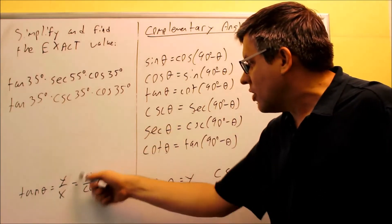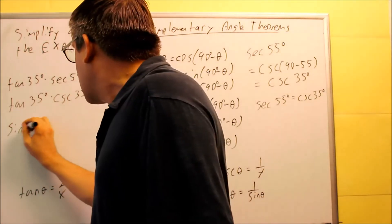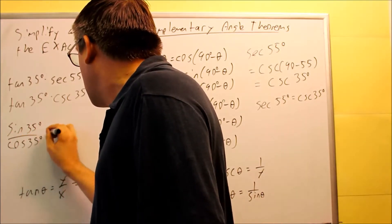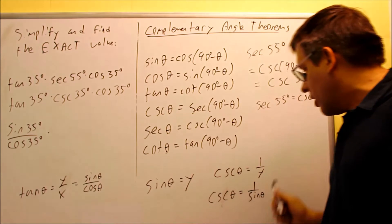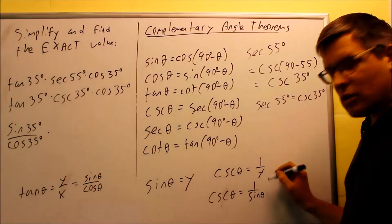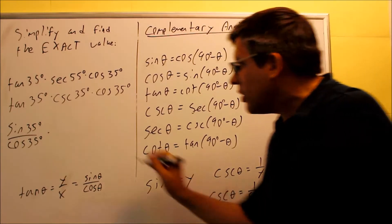Your tangent is this, so I'm going to go ahead and put in sine 35 divided by cosine 35. The cosecant there, I use this formula down here, 1 over y, same thing as 1 over sine. So, that's going to be 1 over sine of 35 degrees.